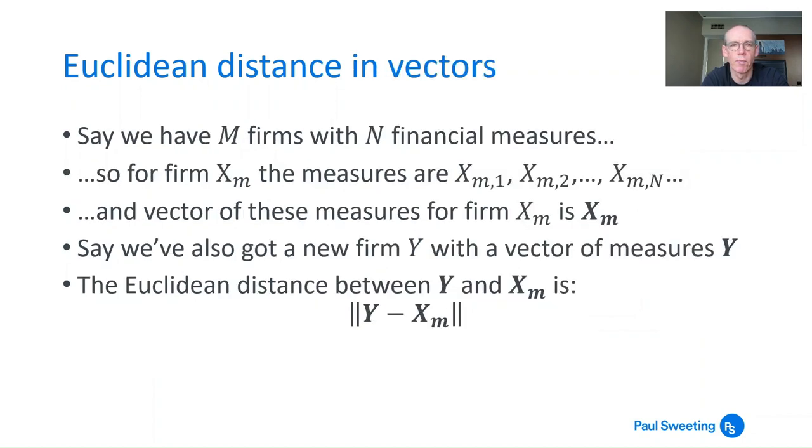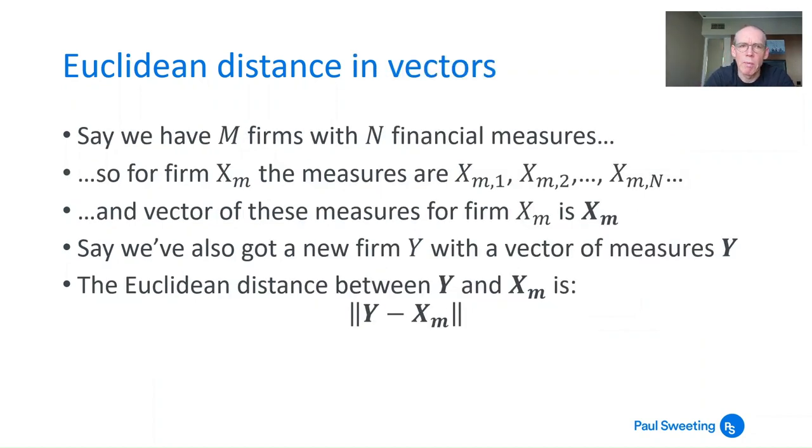If you're talking about, say, M firms with N financial measures, it can get quite tiring writing all that out longhand. So let's say you've got firm xm, and the measures for firm xm are xm1, xm2, all the way up to xmn. You could say that the measures you've got for xm can be described by a vector, which is just xm in bold. If you've got a new firm Y with a vector of measures Y—that's y1, y2, all the way to yn, but bold Y is the vector of those measures—then the Euclidean distance between Y and xm is the norm of the vector Y minus the vector xm. So what do we mean by the norm?